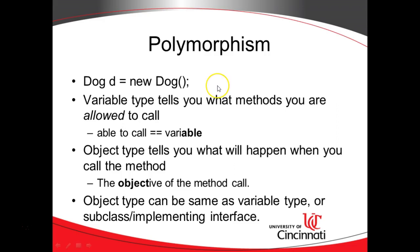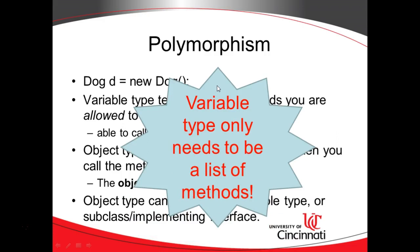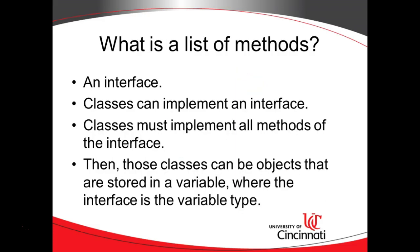Here's where polymorphism becomes very interesting. The variable type only needs to be a list of methods, because that's all a variable type is doing — telling you what you're allowed to call. If it's anything more than a list of methods, if it includes method behaviors, the variable type might have too much knowledge. So what is a list of methods? Well, an interface is essentially a list of methods — and I don't mean a user interface. I mean an interface in the object-oriented concept, where it's something used as a variable type and it happens to be a list of methods.